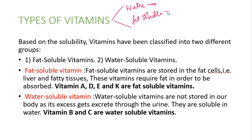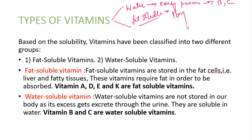Water-soluble vitamins are those which easily pass out of the body. Examples of water-soluble vitamins are vitamin B and C. Fat-soluble vitamins are stored for a long duration in fat cells. We store vitamins A, D, E, and K in fat cells.